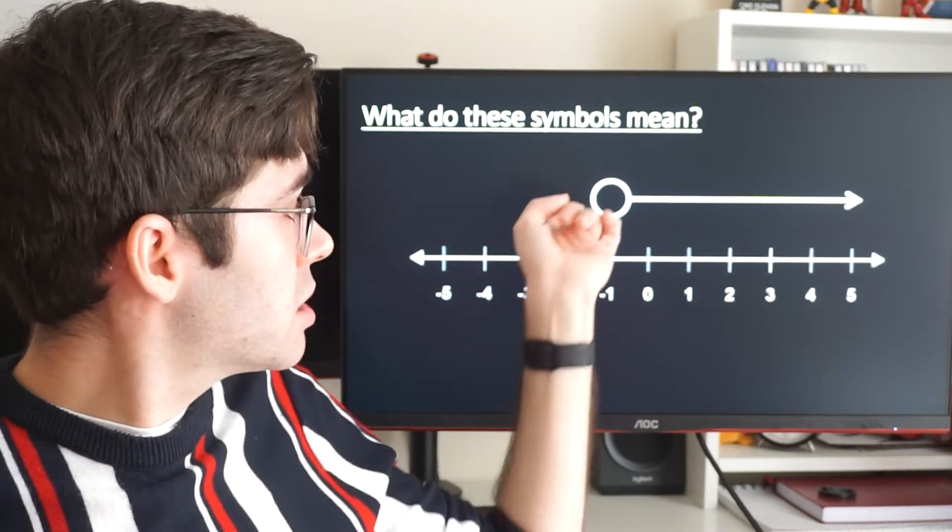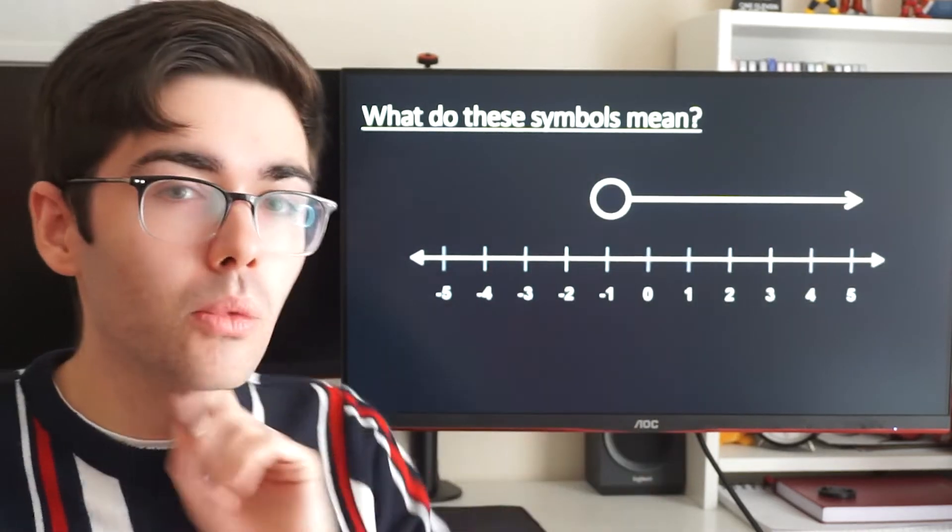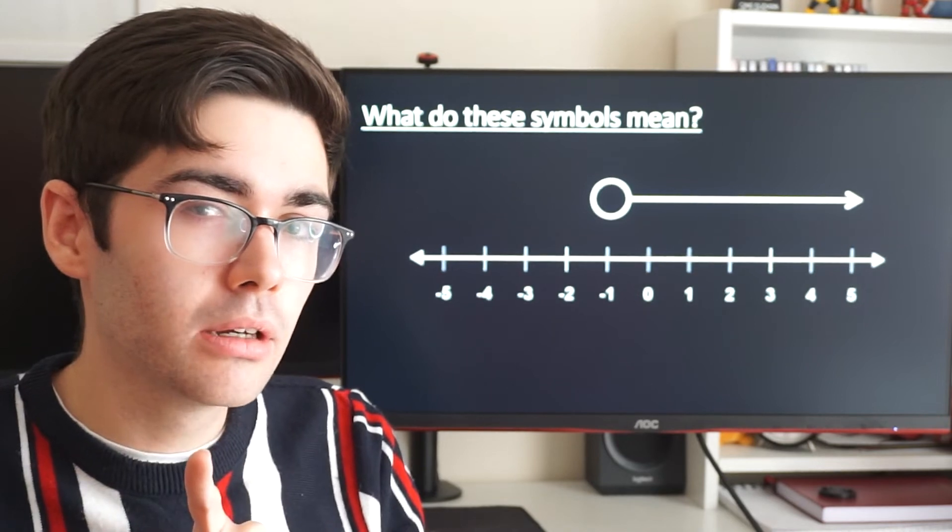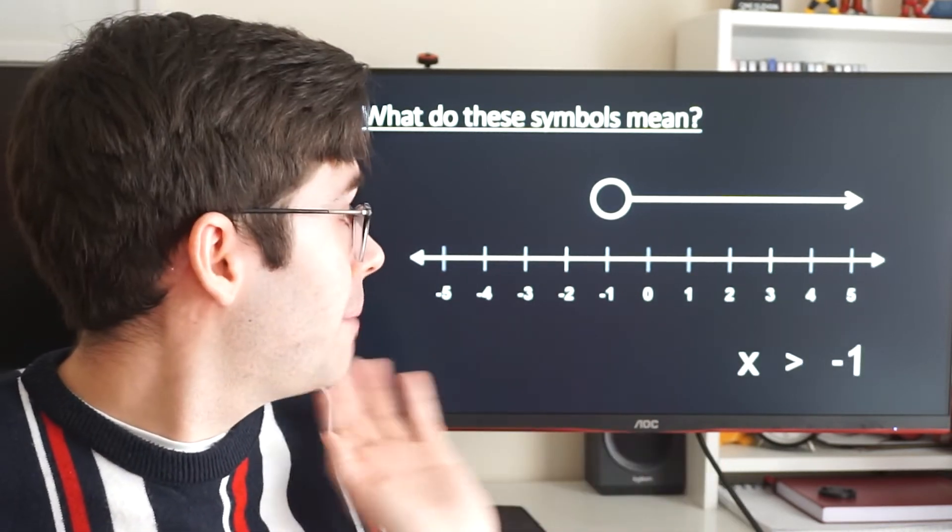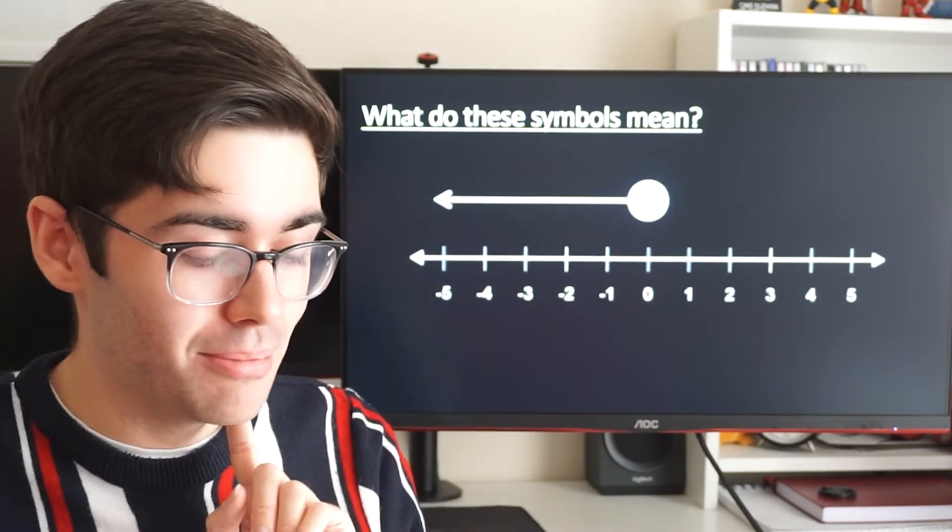If I look at this one, empty circle on minus one, going up, what might this be? Have a think. This is x is bigger than, greater than, minus one. Not equal to it because the circle's empty.